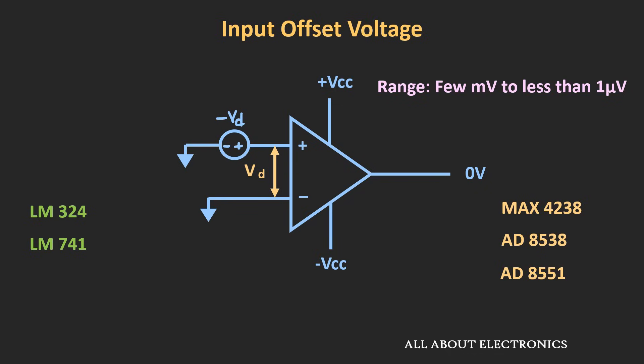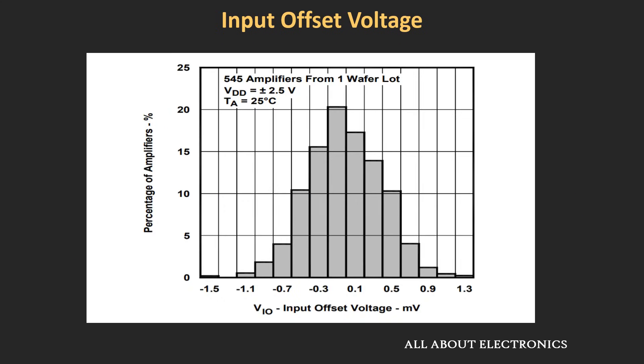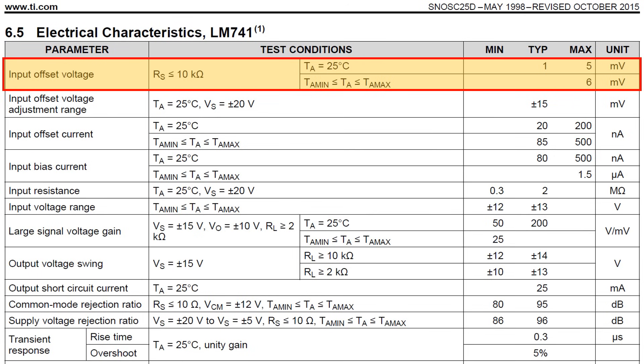For example, for the LM324 and LM741, the input offset voltage is typically in the range of a few millivolts. While for very high-precision op-amps like the AD8538 and AD8551, the input offset voltage is in the range of a few microvolts. It is very hard to predict the polarity of this input offset voltage, and even two op-amp ICs manufactured from the same wafer can have different input offset voltages. So manufacturers provide the maximum value of the input offset voltage, ensuring that the actual value will always be below that maximum.